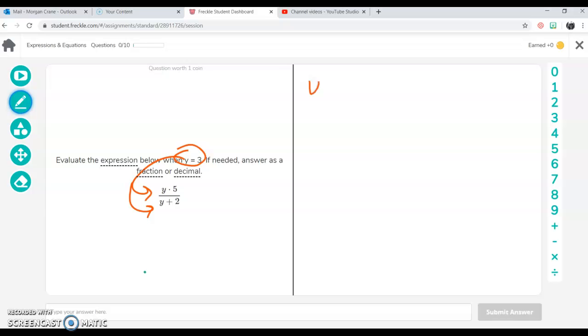So we have y times 5, remember that dot means that, over y plus 2. So what you're going to do is take 3 and replace it in the y. So 3 times 5 over 3 plus 2.